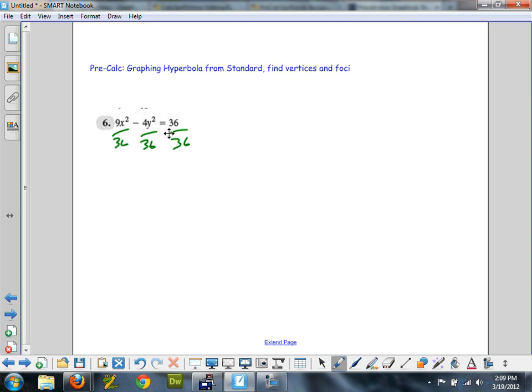Okay. Now, 9's canceled here. 9 canceled with the 9 and the 36, and that leaves x squared over 4. 4 cancels, leaves a 9. I got minus y squared over 9 equal to 1.